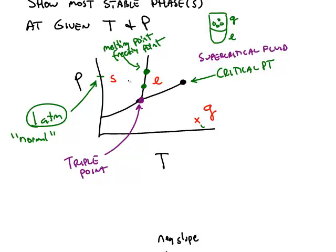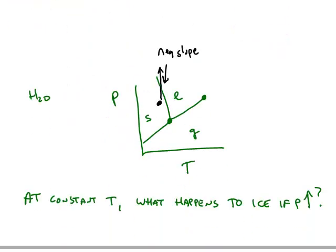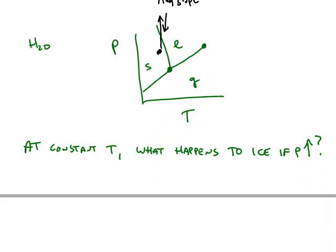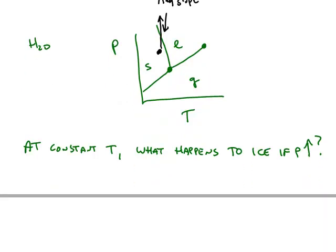So most substances, if you're in the solid region and you increase the pressure, you stay within the solid region. Water is unusual because increasing the pressure at constant temperature makes solid water turn into liquid water.